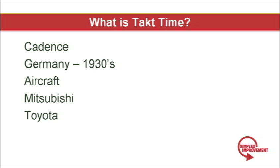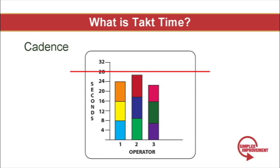So Takt time forms a cadence by which we need to build. Ideally, the entire production line moves at this cadence. Takt is actually a German word and it refers to a musical beat. The concept of Takt was pioneered by the Germans in the 1930s to support their aircraft industry. They created a cadence in which all aircraft and all supporting stations would work to. This concept was later adopted by Mitsubishi for building aircraft and it finally made its way over to Toyota, where we see it today as part of the Toyota Production System.